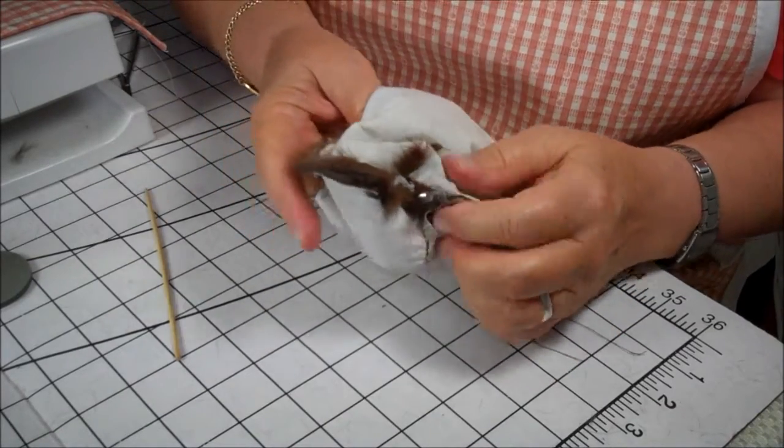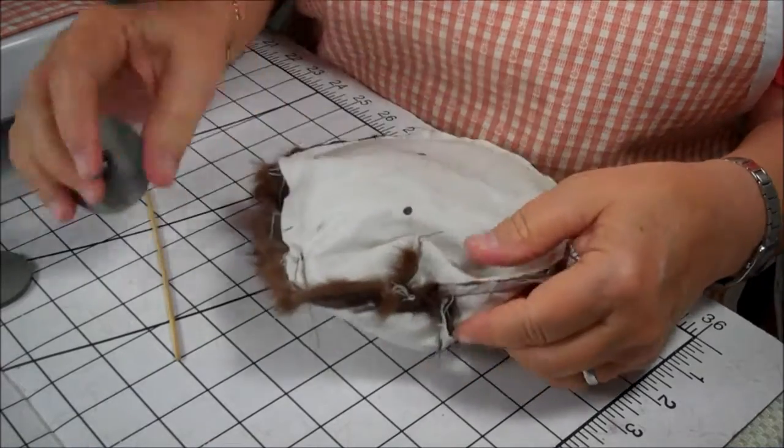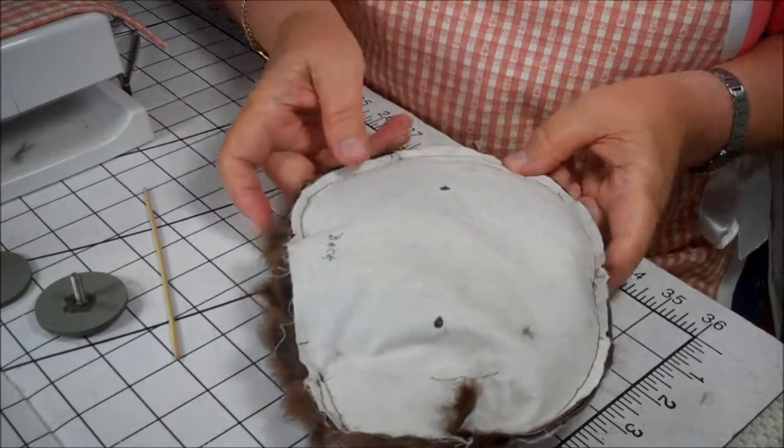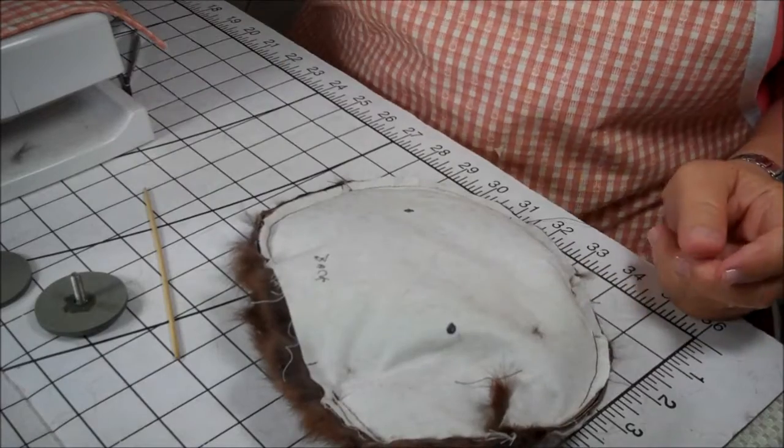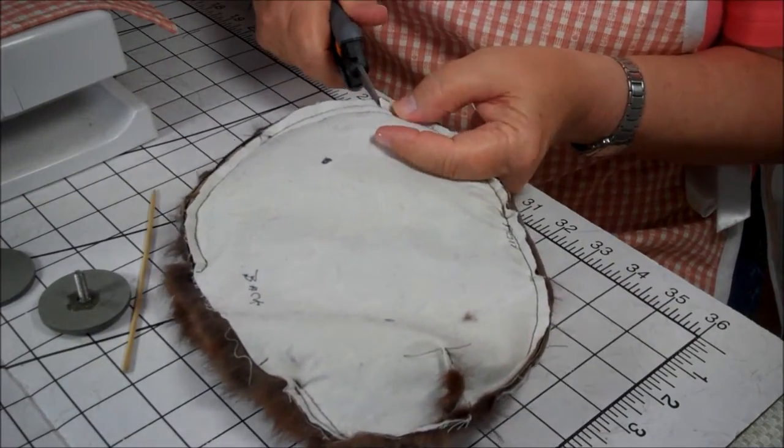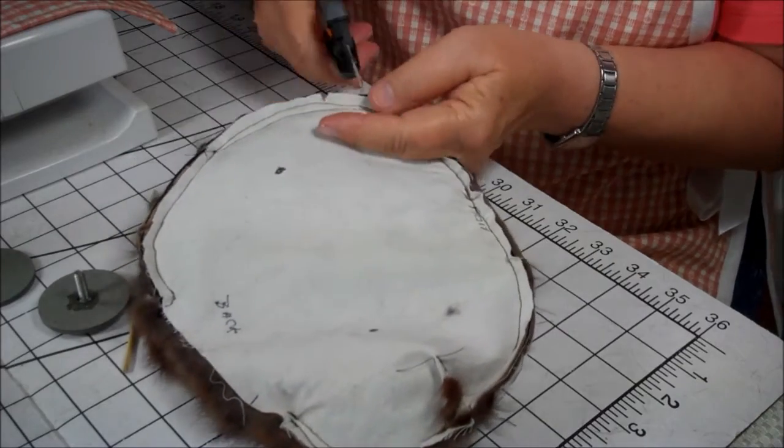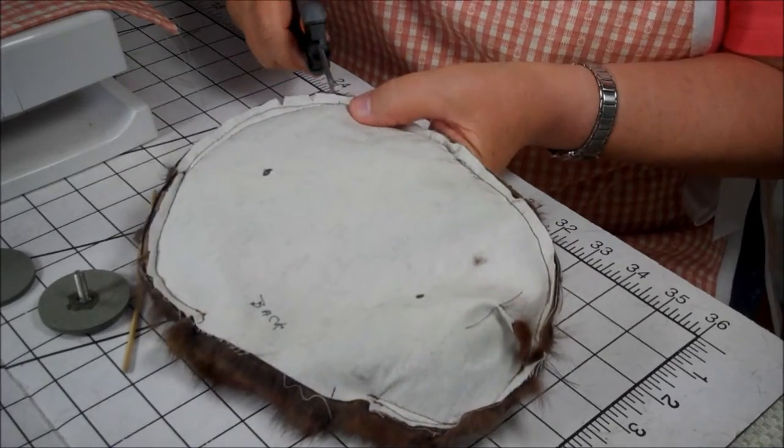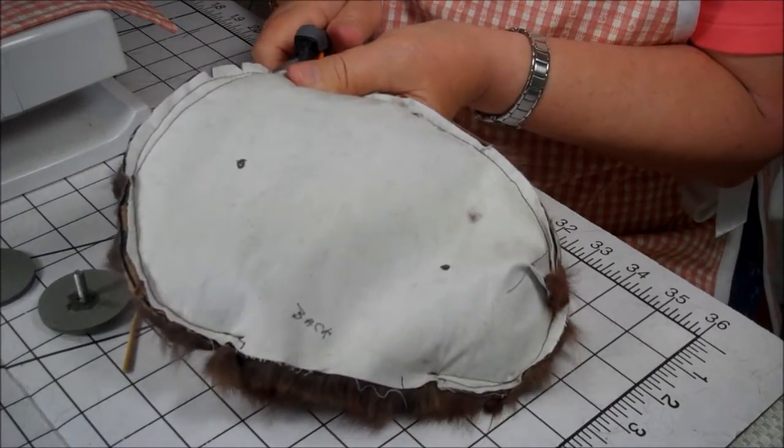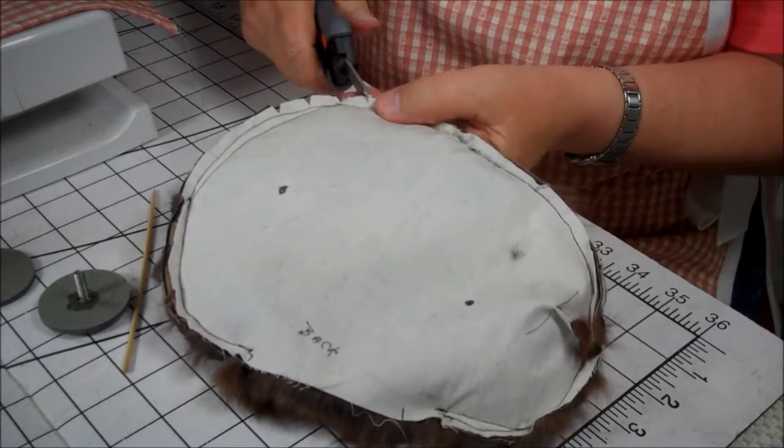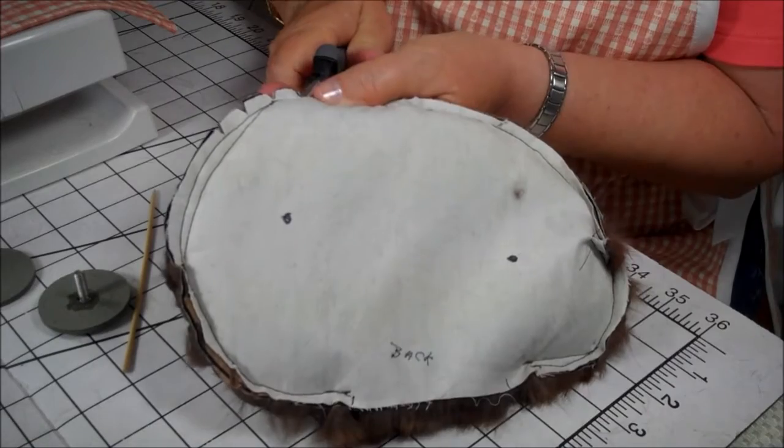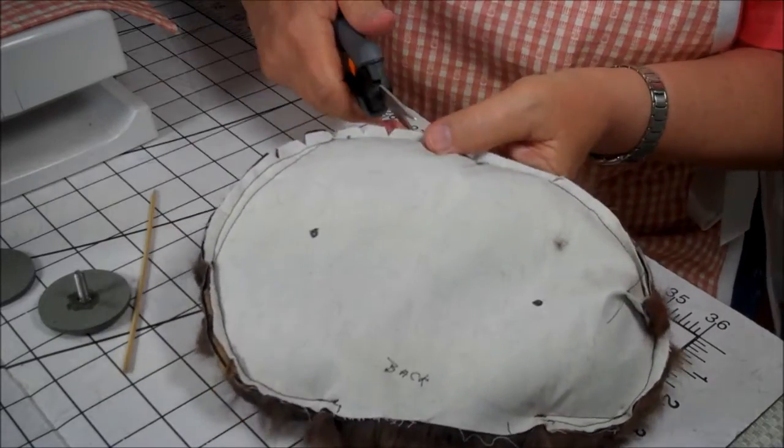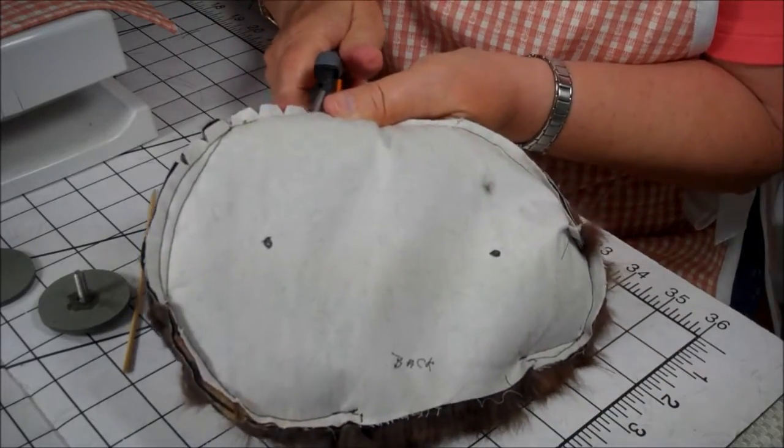So what I'm going to do next is turn the body right side out. I might have to make a few clips here in order for it to turn out. I'm going to make a few clips on the stress points before I turn it right side out. If we don't do this, when we turn it right side out, the bear will have some puckers. So we need to clip it and put some ease into the fabric and the fur.